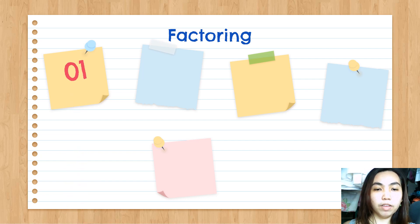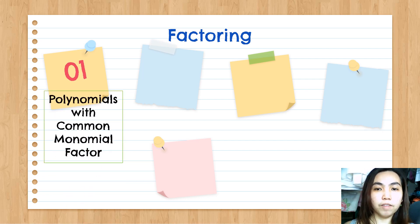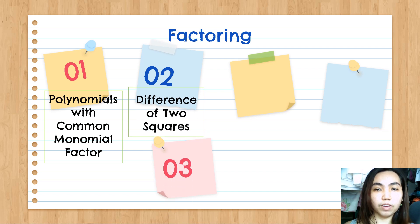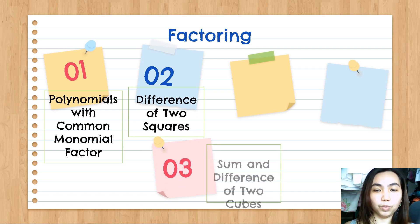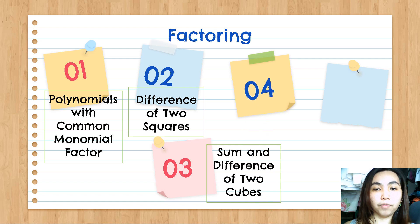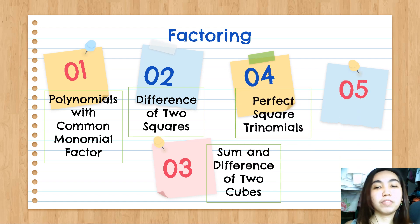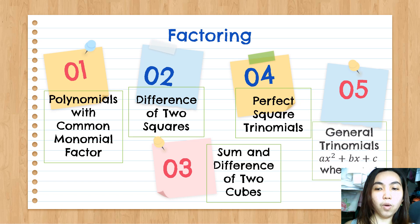Topic 1: factoring polynomials with common monomial factors. Topic 2: factoring difference of two squares. Topic 3: factoring sum and difference of two cubes. Topic 4: factoring perfect square trinomials. And Topic 5: factoring general trinomials when a is greater than 1.